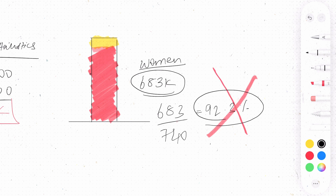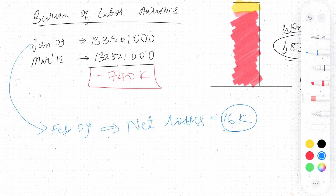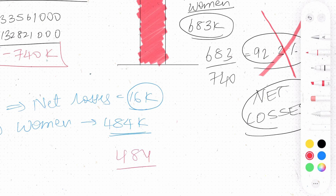But if you change the starting date to February 2009, total net losses become just 16k, while women contributed 484k losses. Divide 484 by 16 and you get 3,000%. So what have we learned? This was a very simple percentage issue, and this is the problem with intuition.